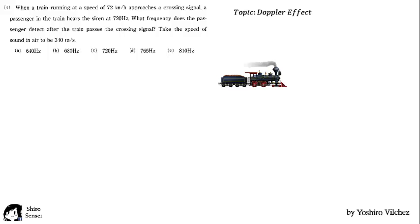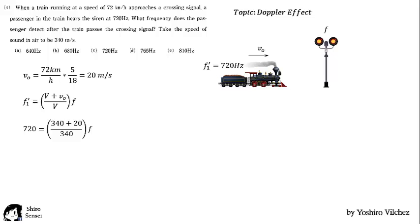The topic here is the Doppler effect. We have the train, the crossing signal which siren is at frequency f, and the speed v₀ of the train, which in units is 20 meters per second. The frequency heard is 720 Hz, so we apply the Doppler effect formula. As the train is approaching, we sum the speed of the train to the speed of sound. And calculating, we find the real frequency, 680 Hz.